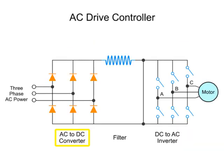The converter or rectifier component consists of an array of fast-acting switches that convert an incoming AC voltage to a pulsating DC voltage. The intermediate circuit acts as a filter and consists of a DC bus and associated circuitry. This stage of the wave conversion serves to stabilize and smooth the pulsating rectifier output to generate a constant DC voltage.